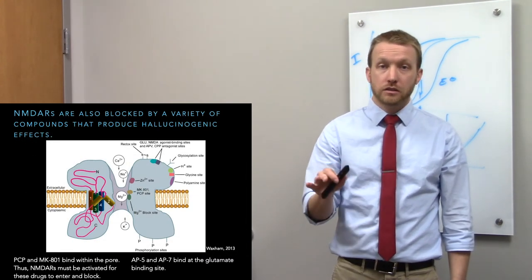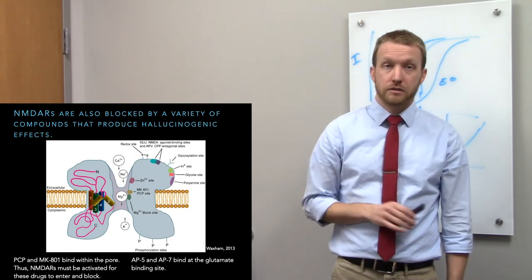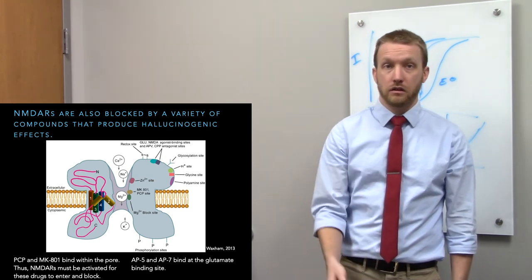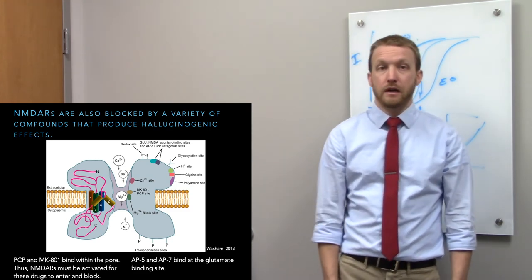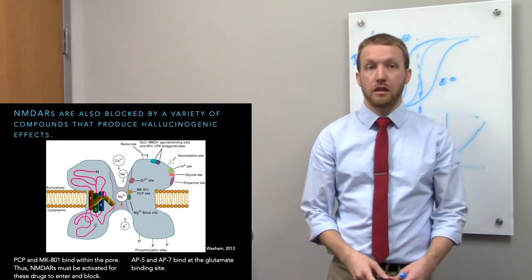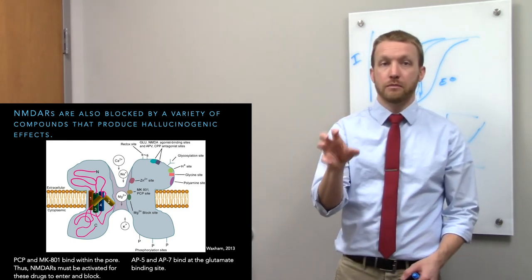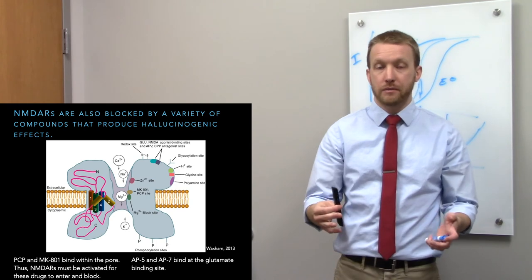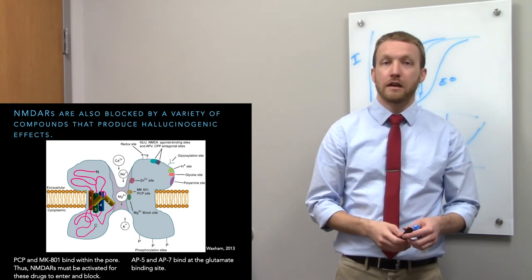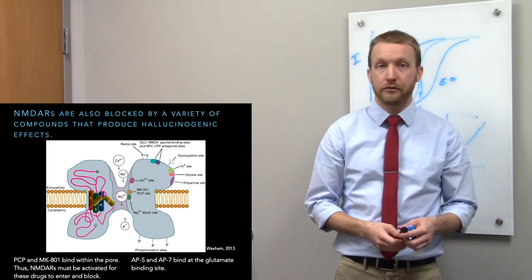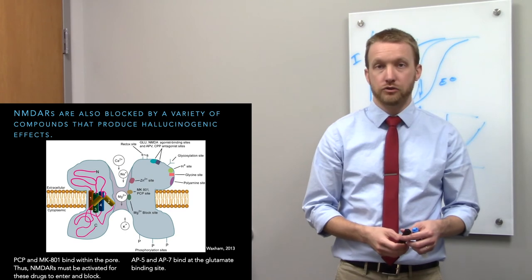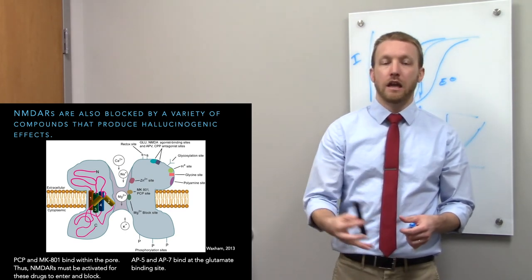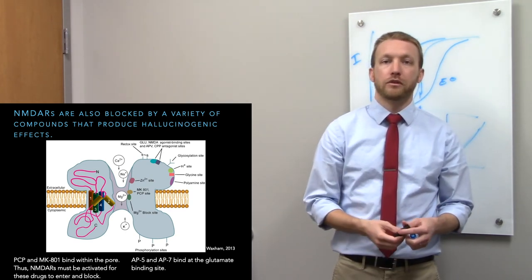Several drugs affect NMDA receptors with hallucinogenic effects. PCP and MK801 are open-channel blockers that bind within the pore after the channel opens. AP5 and AP7 are commonly used laboratory antagonists that bind at the glutamate binding site and prevent receptor activation.